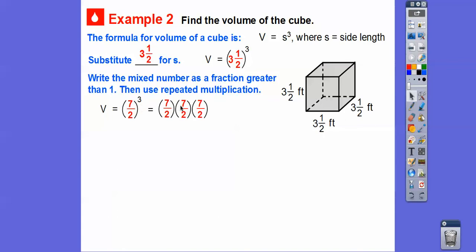So 7 times 7 is 49, and then 49 times 7: seven times 9 is 63 — carry the 6 — then 7 times 4 is 28, plus 6 is 34. So the numerator is 343. The denominator is 2 times 2 is 4, and 4 times 2 is 8. So we get 343/8.